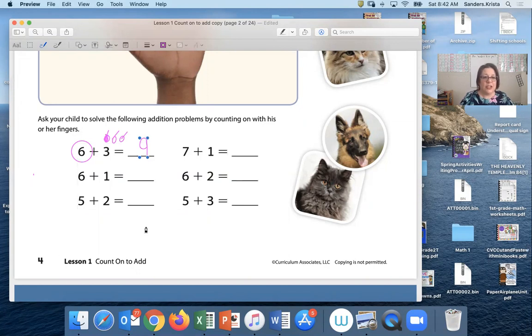Next, they changed that up on me. Now we have 6 plus 1. Which number is greater, 6 or 1? 6 is greater. Very good. And we'll draw one circle above the 1 and we're gonna count on.